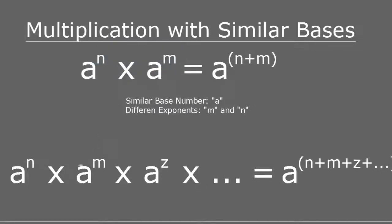If you have many exponents being multiplied with each other and the bases are the same but the exponents are different, the same property applies — you can have more than one being multiplied with each other. Just keep the same base number and add all of the exponents. As long as the base is the same and they are being multiplied, you can just keep the same base number and add the exponents.